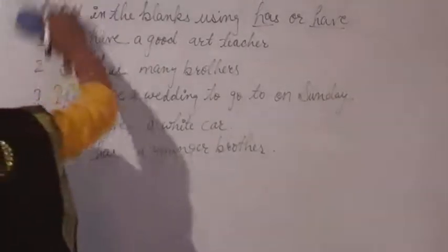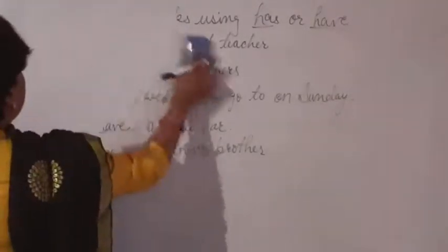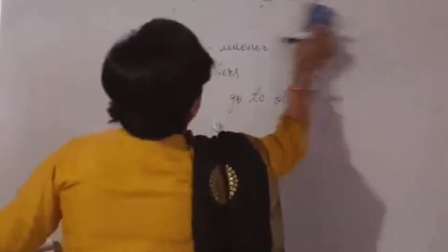Now look at another exercise related to had. How can we choose had? Had indicates past tense, so in a sentence, if any word tells us about a past action, we will choose had.